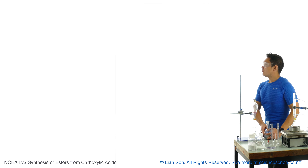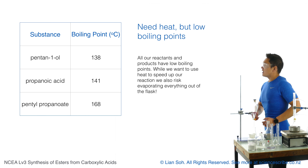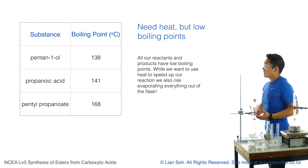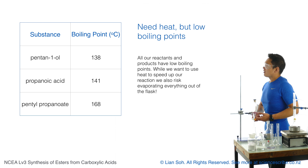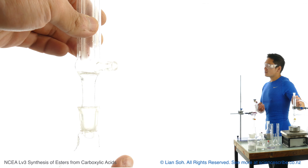The problem with applying heat to the bottom of the flask is that we risk evaporating off some of our reactants and any products that form. So we somehow need to recondense all of the vapors which are going to escape, and to do that we're going to use a condenser tube.